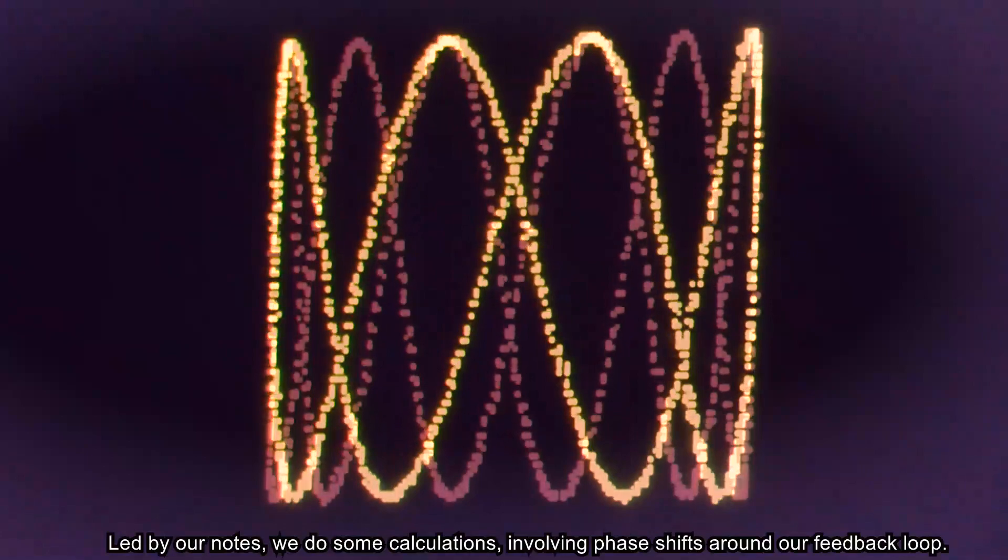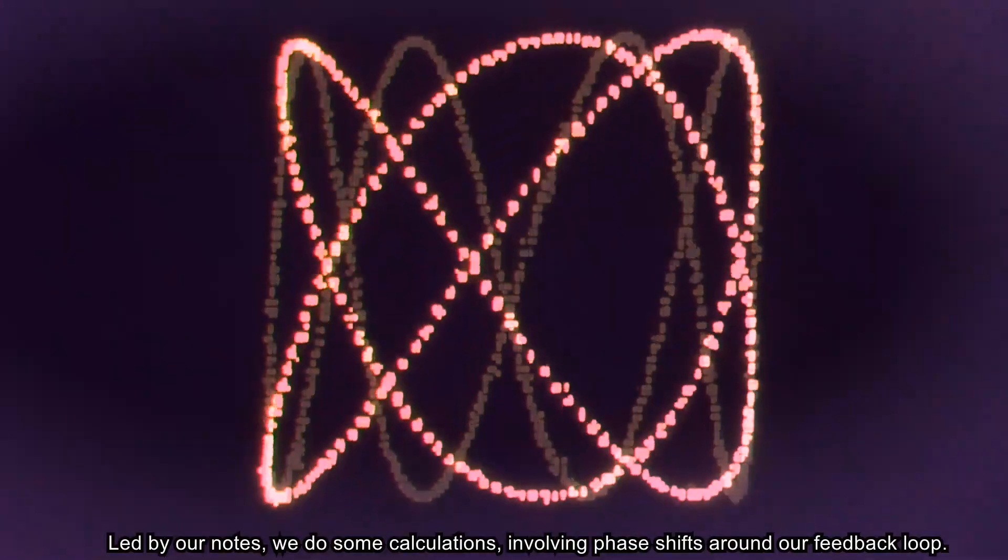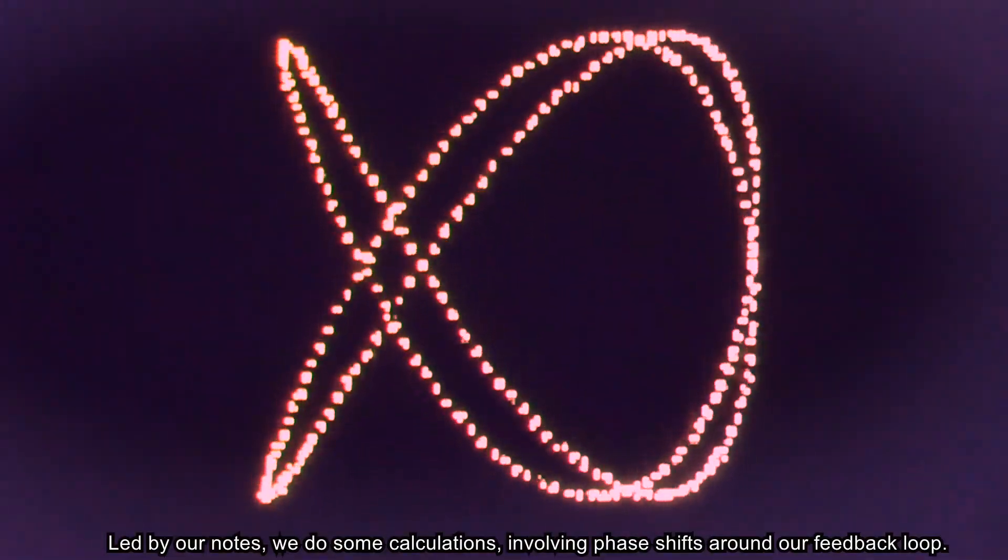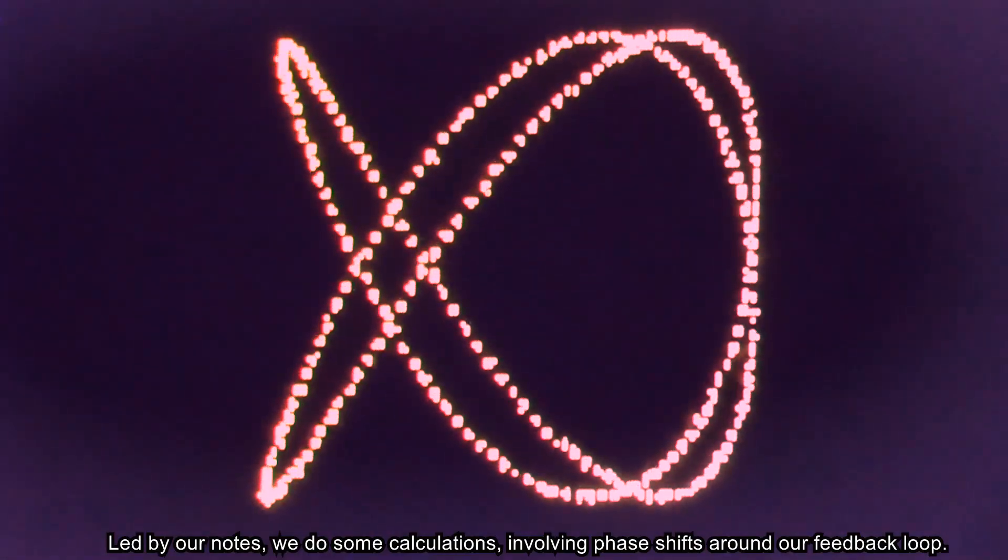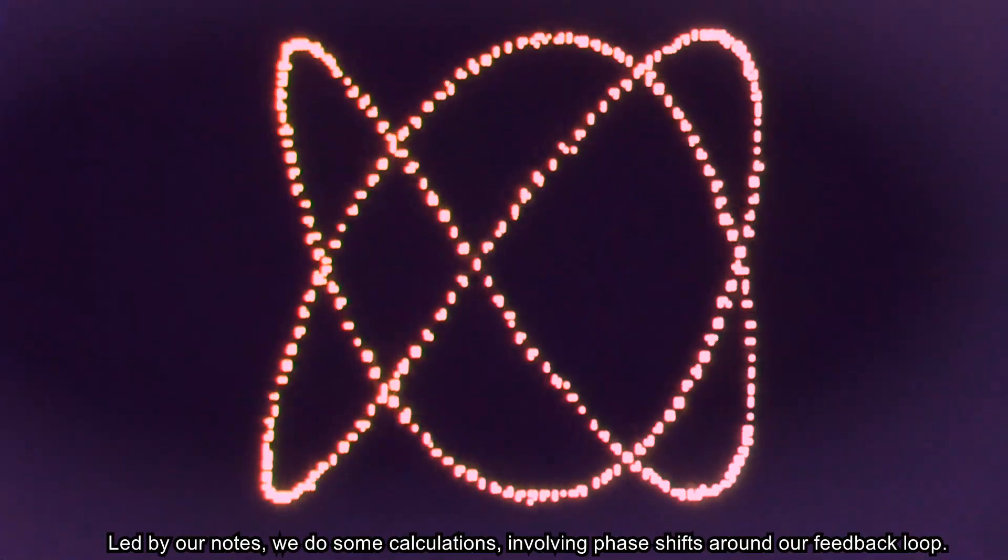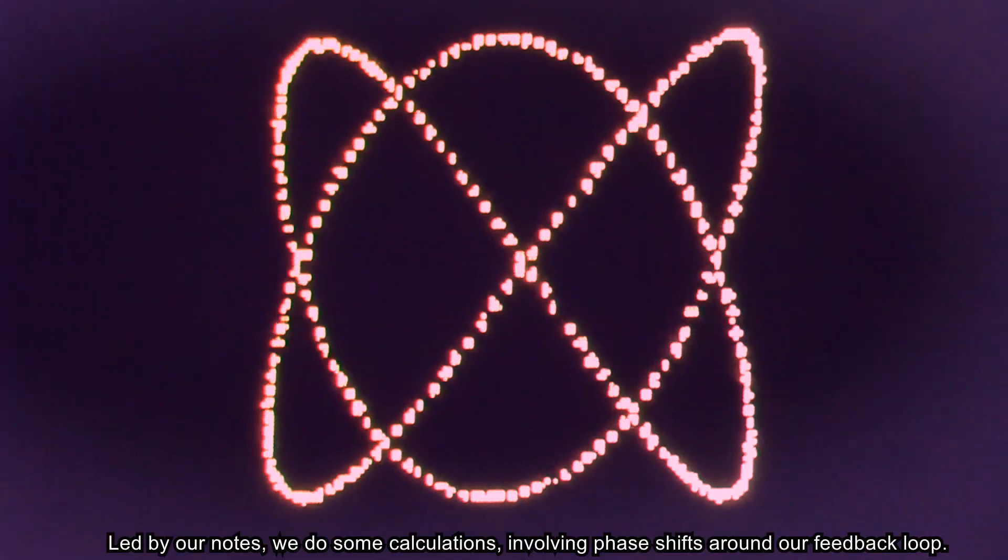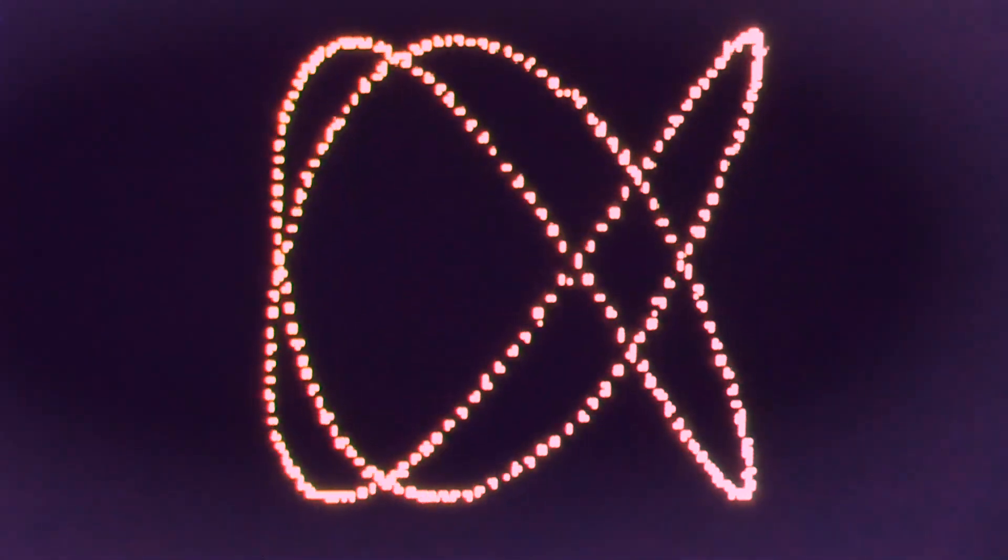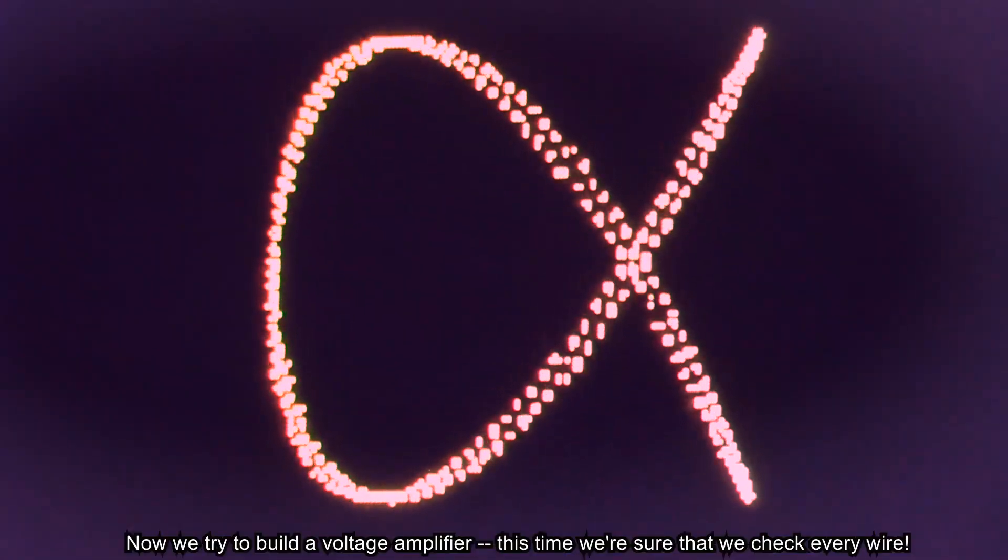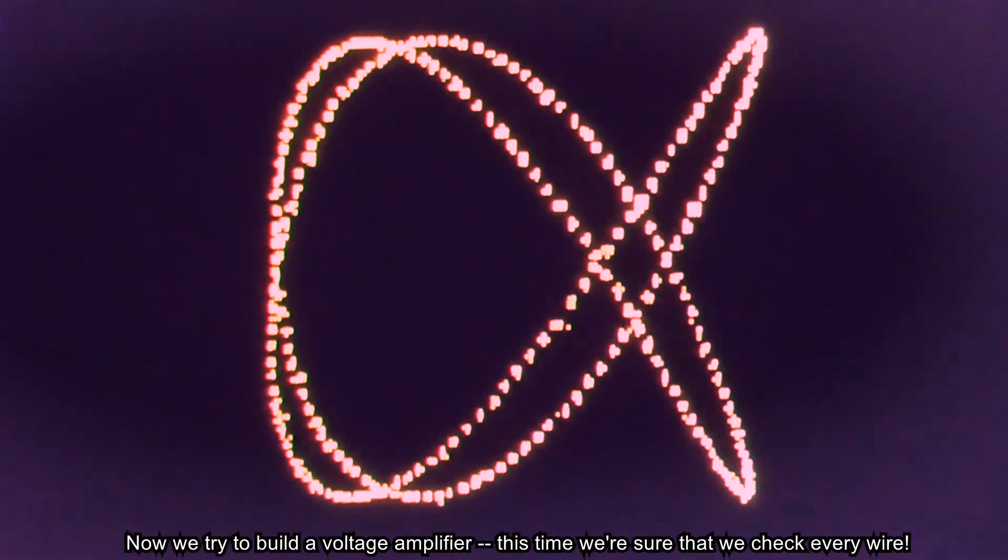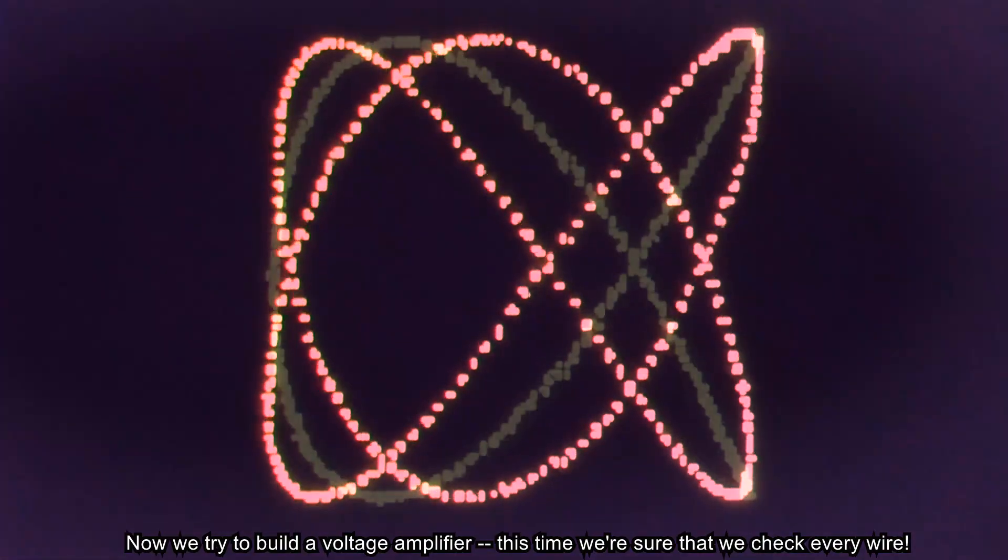Led by our notes, we do some calculations, involving phase shifts around our feedback loop. Now we try to build a voltage amplifier.